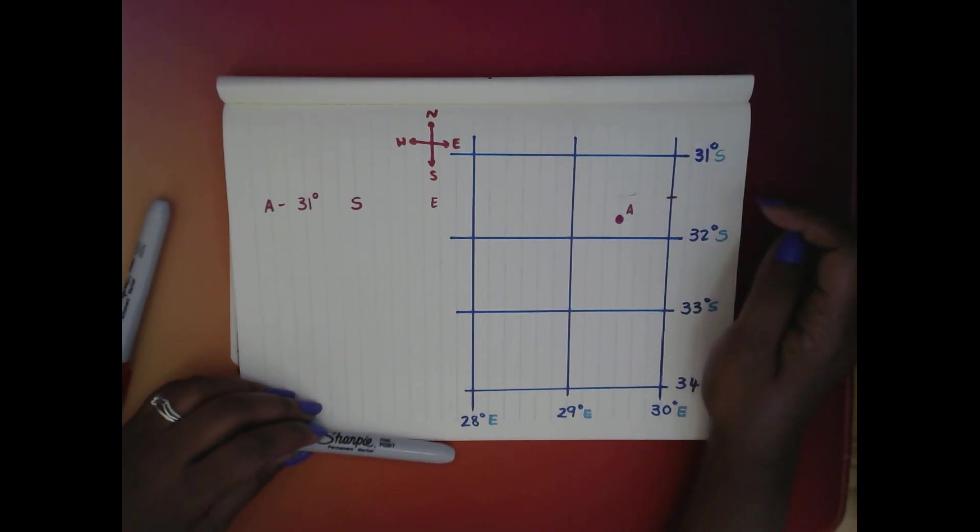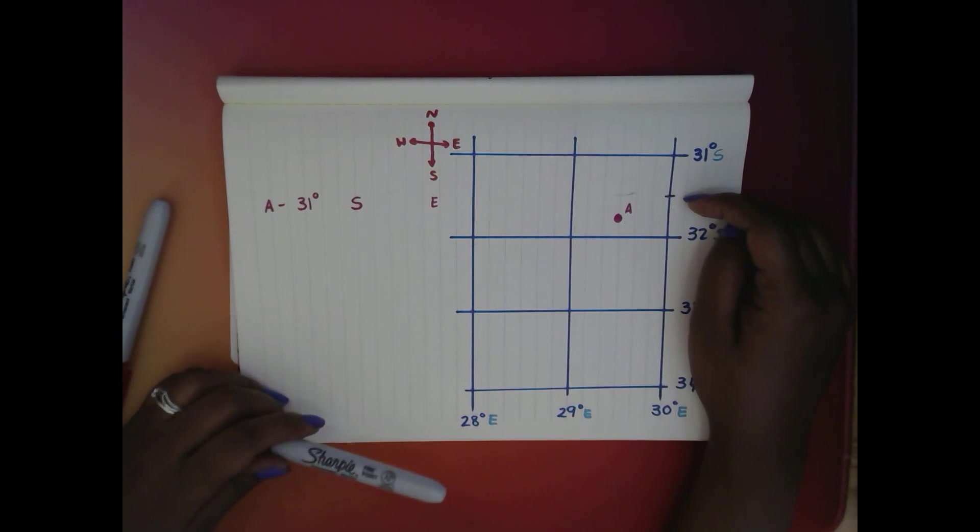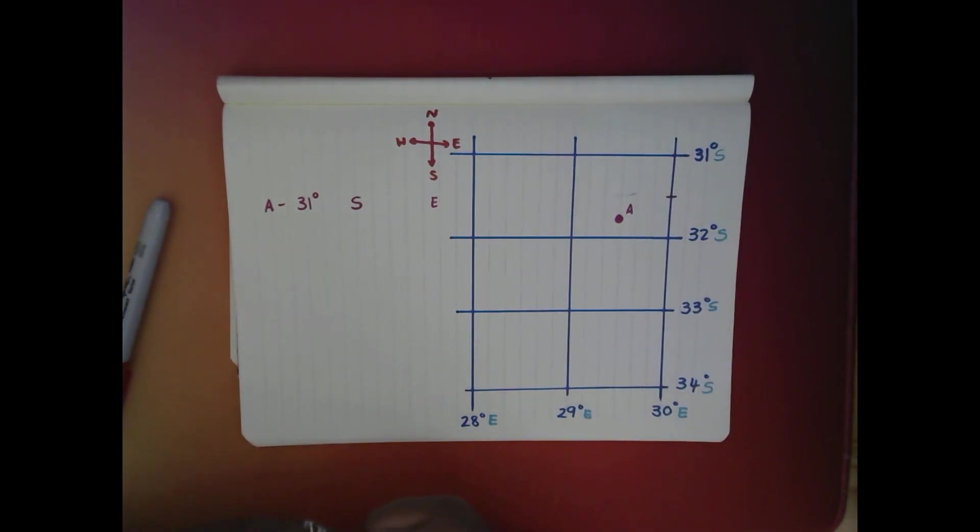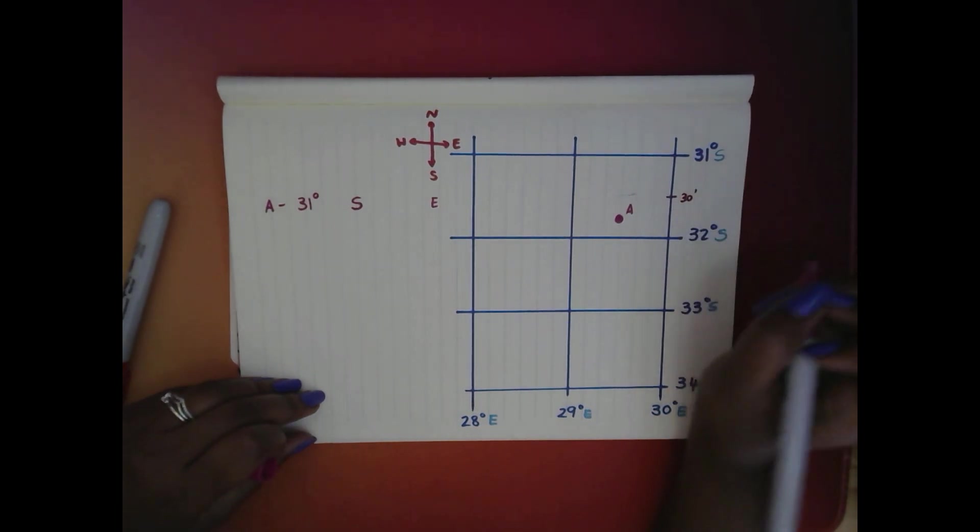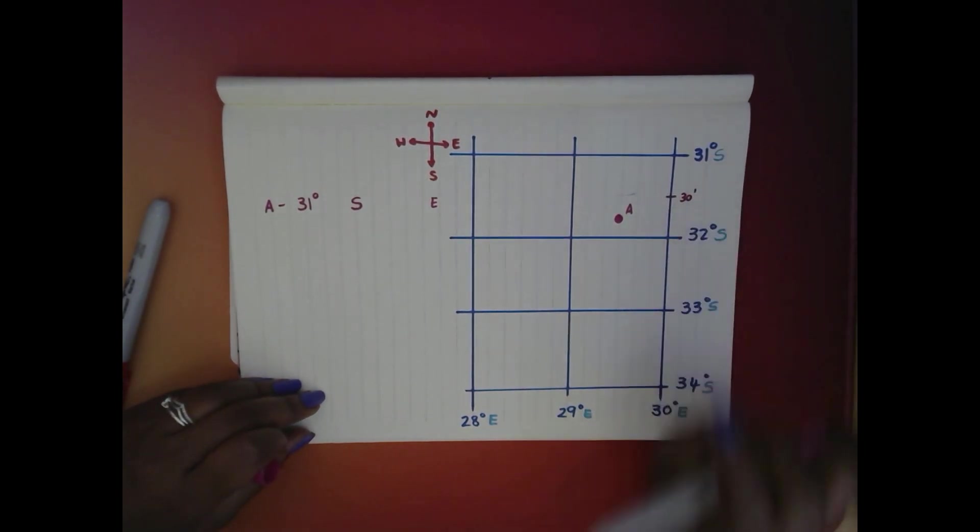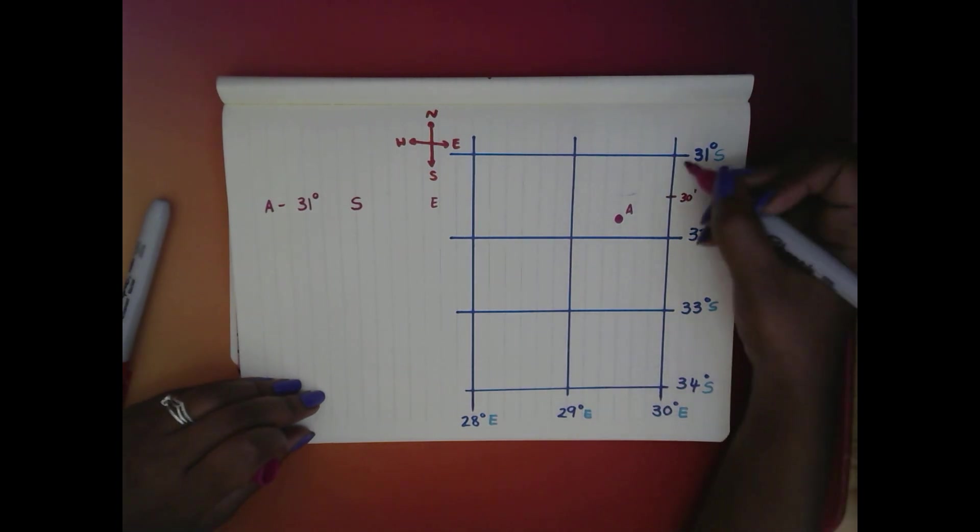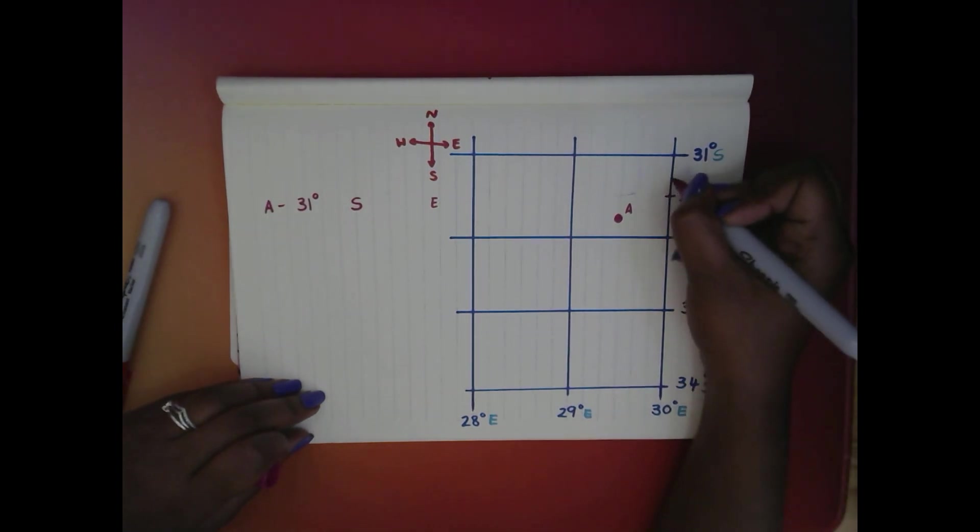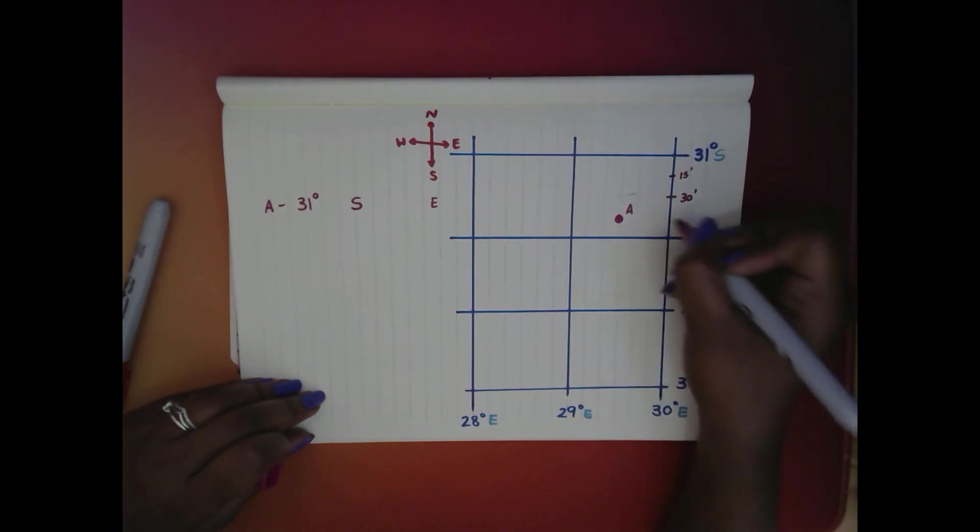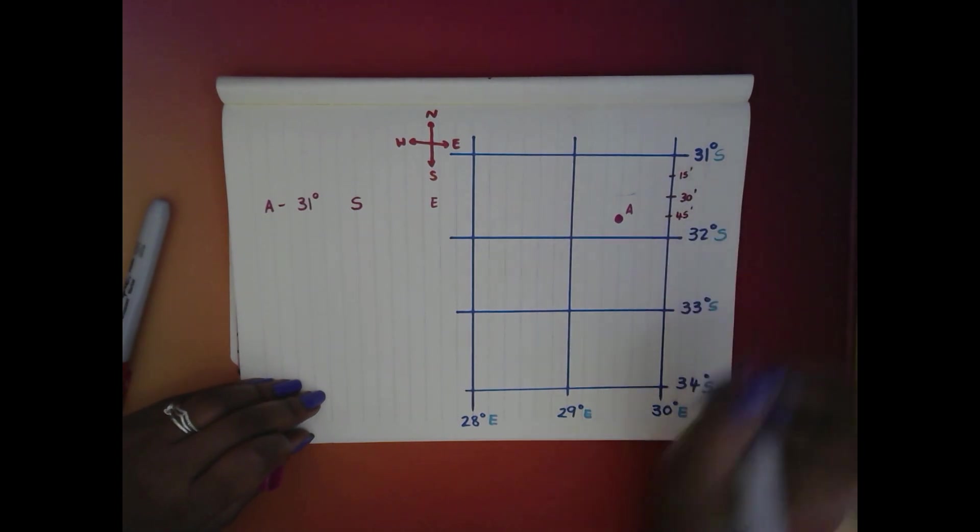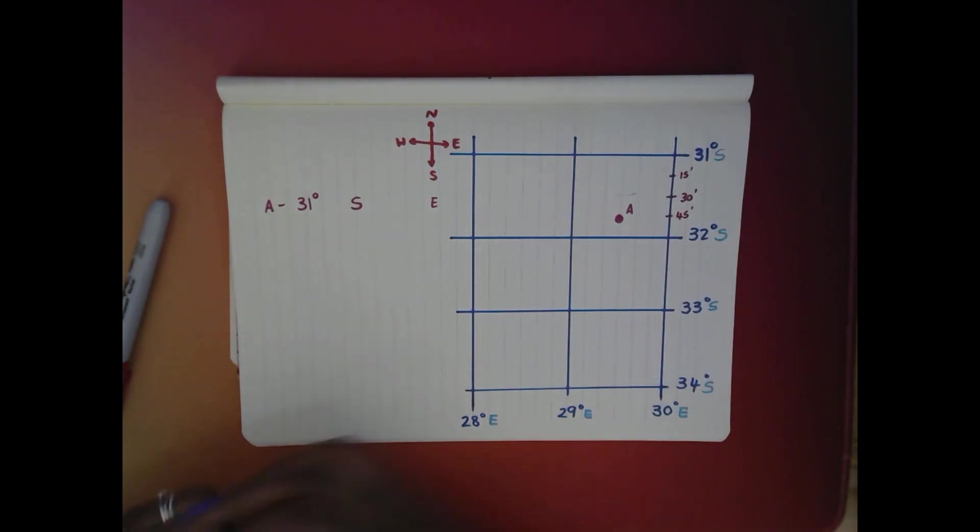So the middle is over there, which means that this is probably 30 minutes, right? And the minute sign is a little apostrophe like that. So that means that if we go halfway between there and there, so over there, this will be 15 minutes. And between there and there, that will be 45 minutes.